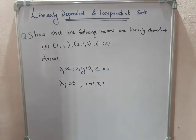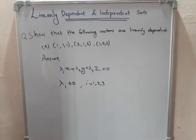If it is linearly independent, lambda is equal to zero. If lambda equals zero, it is linearly independent. This is the linearly independent condition.